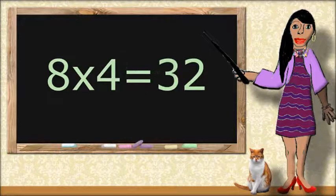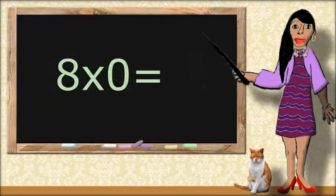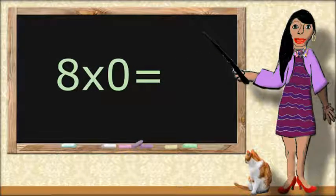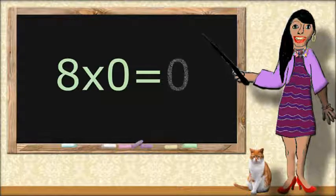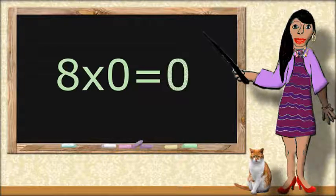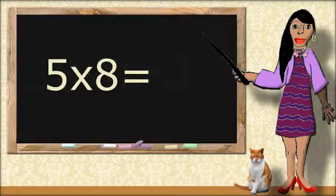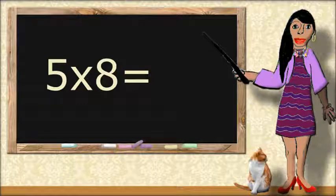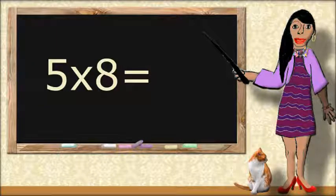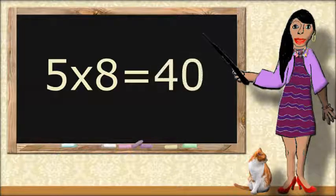8 times 0 equals... 0. 5 times 8 equals... 40.